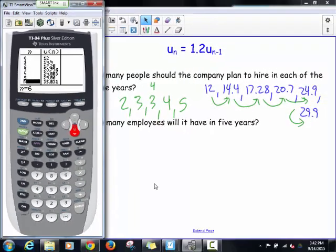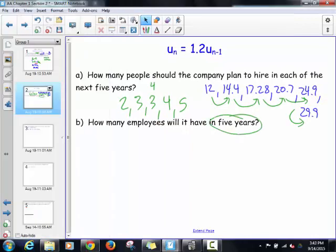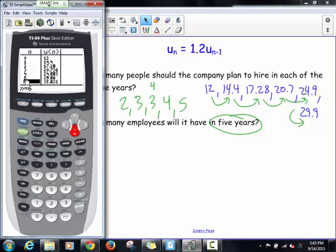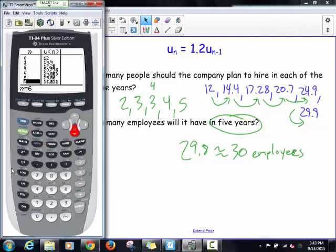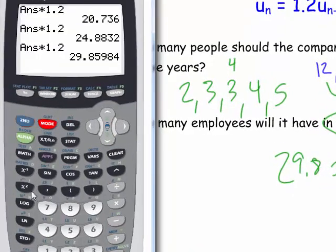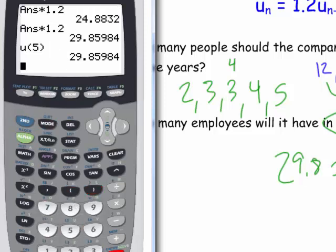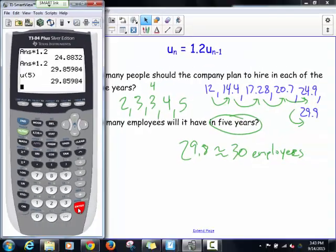The second question asks, how many employees will I have in five years? Well, having the table, it's nice and easy to see. Fifth year, 29.86. So we have about 29.86, we should probably round up to about 30 employees. And remember quickly, if I wanted to do it on my home screen, I can always call upon my sequence by finding that U by hitting second seven and calling upon the fifth year: 29.85. You can do that on your home screen, you can do it on the table. All kinds of ways to do this now.